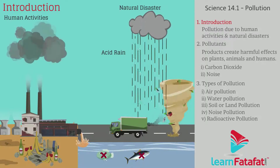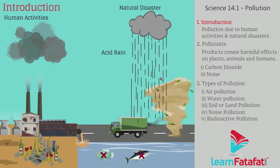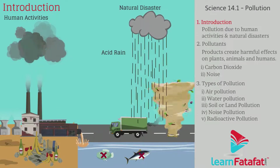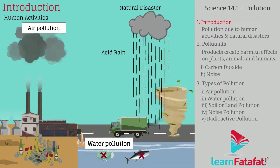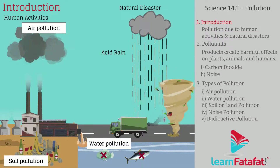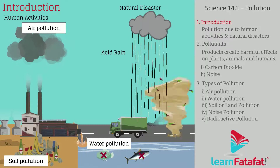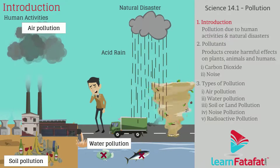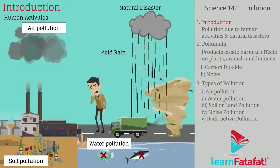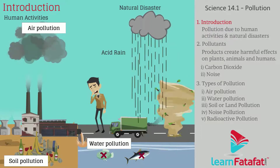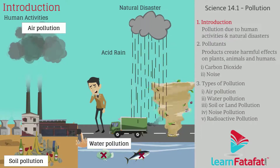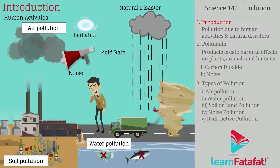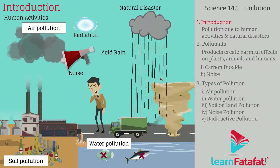Due to human activities or natural disasters, the abiotic factors in the environment such as air, water, and soil get polluted — that is, they become unsuitable as well as harmful for living things. Radiations and noise too are harmful if they exceed above a certain limit.